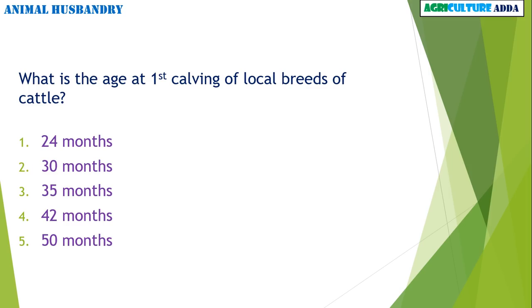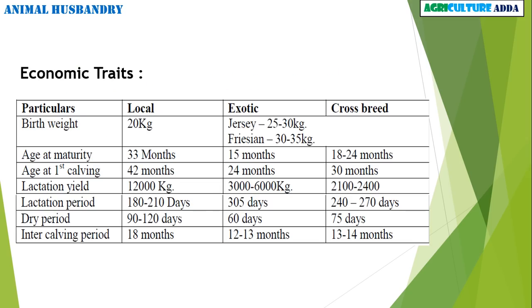What is the age at first calving of local breeds of cattle? 24 months, 30 months, 35 months, 42 months, or 50 months? These are the economic traits of cattle. Age at maturity, age at first calving, and lactation period are very important. Please note down the table — it will be very useful.